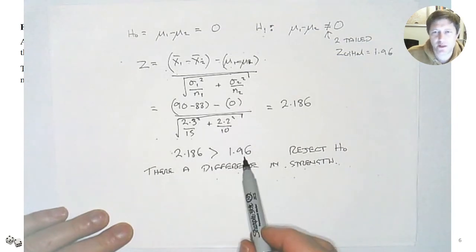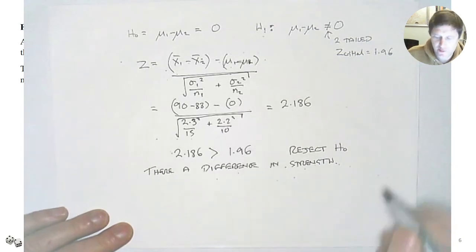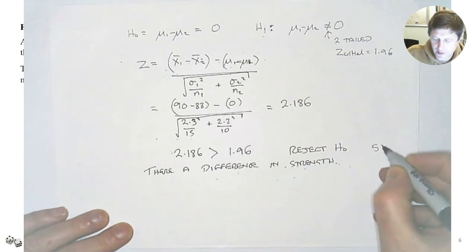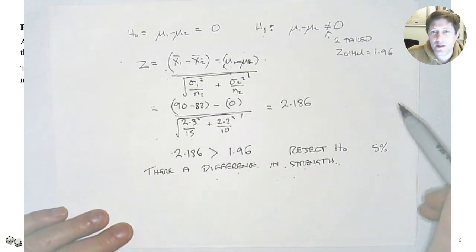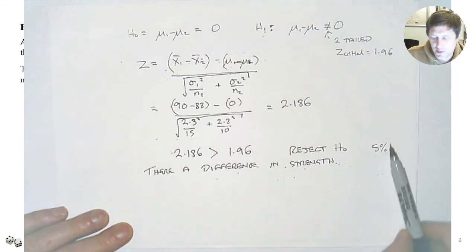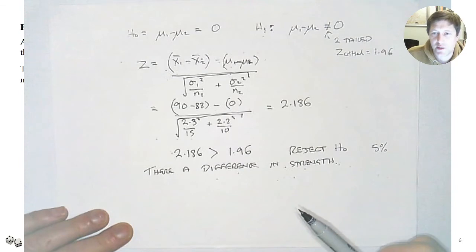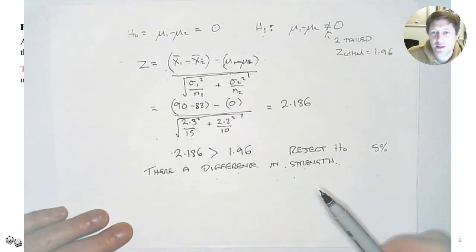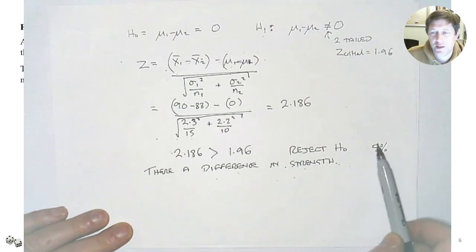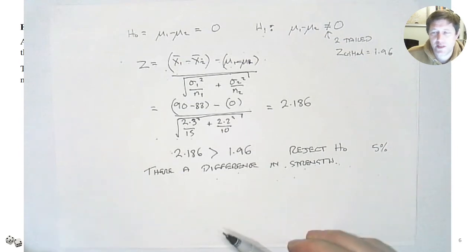But only just — 2.186 is only a little larger than 1.96 at the 5% level of significance. If you're making engines and want to ensure quality standards, perhaps you want more confidence. You might do more tests — rather than 15 and 10 samples, increase the number — or repeat the test at a different level of significance.